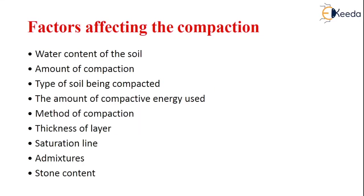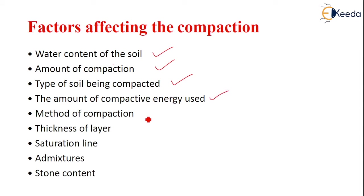The different factors which are affecting the compaction are: water content of the soil, amount of compaction, type of the soil which is being compacted, the amount of compaction energy used for the compaction, the method of compaction used, the thickness of the layer which you are compacting, saturation line, what admixtures are used for the compaction, and the stone content.